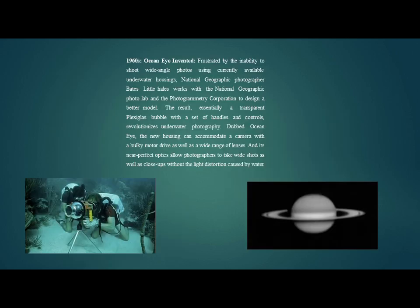In the 1960s, the Ocean Eye was invented. Frustrated by the inability to shoot wide-range photos using available underwater housings, National Geographic photographer Bates Littlehales worked with the National Geographic photo lab and a photogrammetry corporation to design a better model. The result — essentially a transparent plexiglass bubble with handles and controls — revolutionized underwater photography. Dubbed the Ocean Eye, the new housing could accommodate a camera with a bulky motor drive as well as a wide range of lenses, and its near-perfect optics allowed photographers to take wide shots as well as close-ups without the light distortion caused by water.